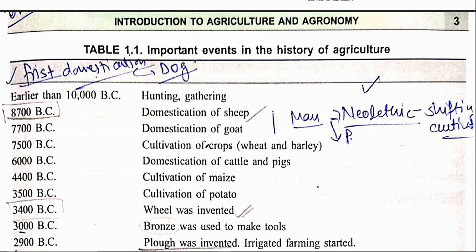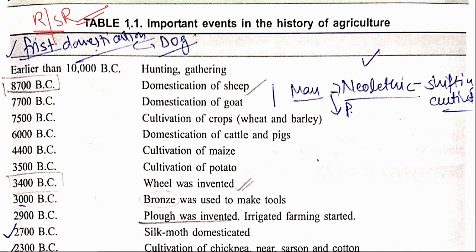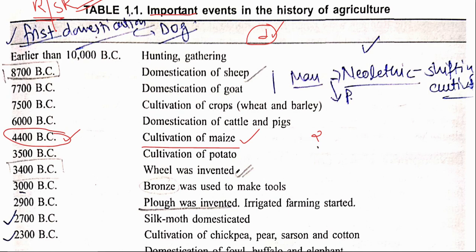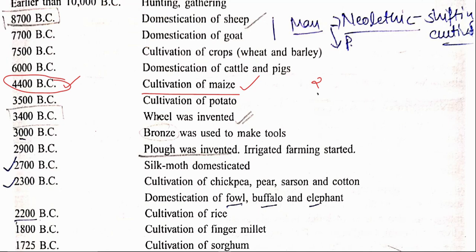Now the most important table. Tables are of great importance in Riddhi and Riddhi, and direct questions are asked from them. For example, in JRF 2020, a question asked: cultivation of maize started in which year? The answer was 4400 BC. At least one question per year comes from this table. So let's begin — domestication of animals began with sheep, and the first crops cultivated were wheat and barley.